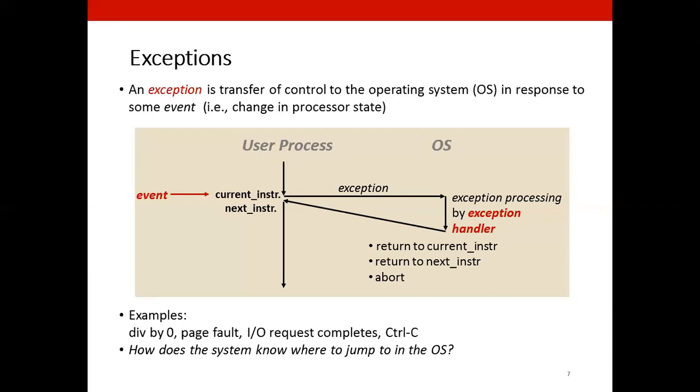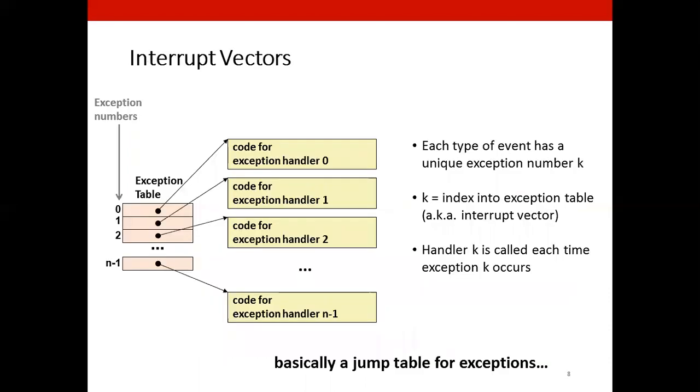So how does the system know where to jump in the operating system? Well, this is implemented using jump tables for switch statements. Simple as that. These are also known as interrupt vectors. So the table has an entry for each type of event that has a unique exception number K.